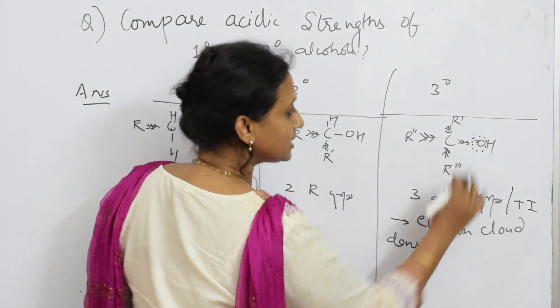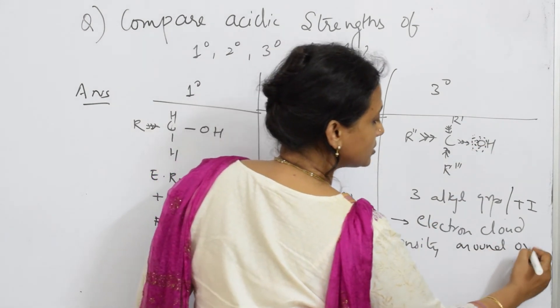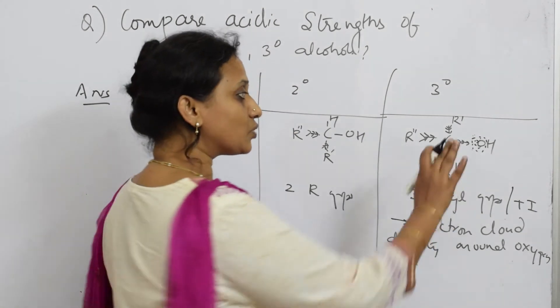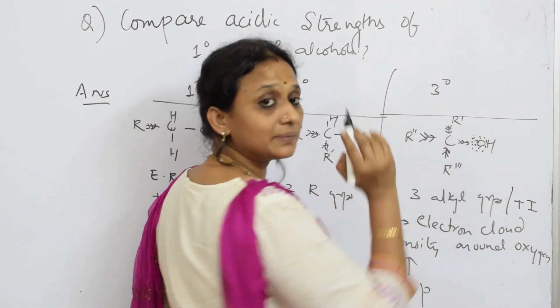Where is electron cloud density increasing? Here, around oxygen increases. Now, when electron density increases, what is decreasing? Polarity decreases. It will not break up into minus charge and plus charge.